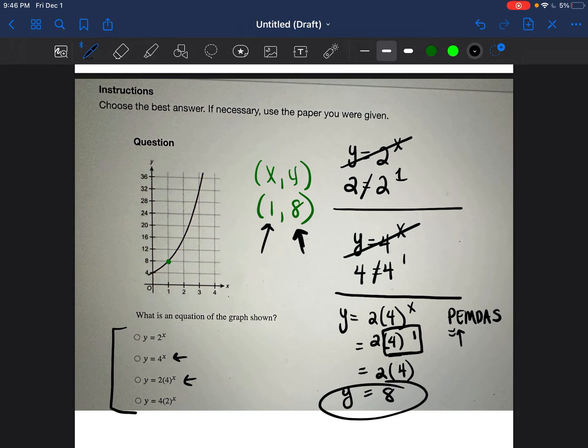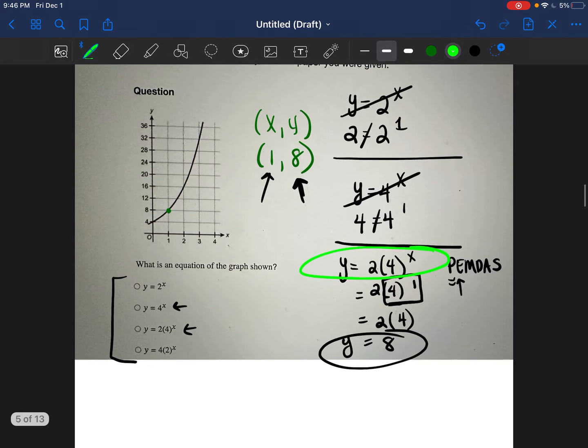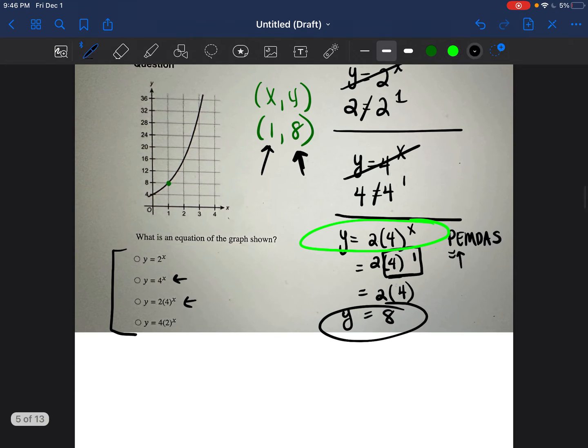So this could be our equation. But again, we're going to go ahead and we're going to check another one. We want to check this last one as well, because sometimes you can put in the 1 and the 8 and you can get the right answer. It may be either equation. So let's go ahead and test it out.